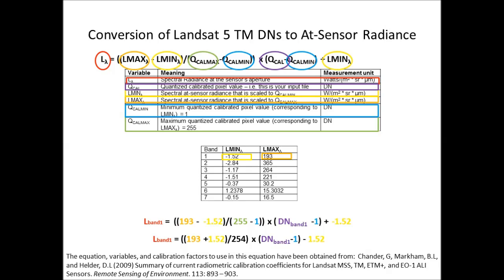So where you've got 193 minus minus 1.52, it becomes 193 plus 1.52. And then on the far right of the equation, you have a plus minus 1.52, so with the positive plus a negative equaling a negative rule, that becomes a minus 1.52.